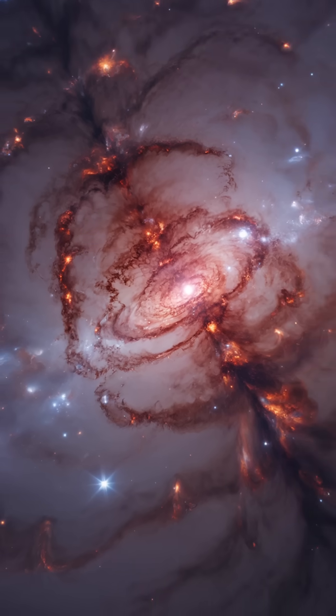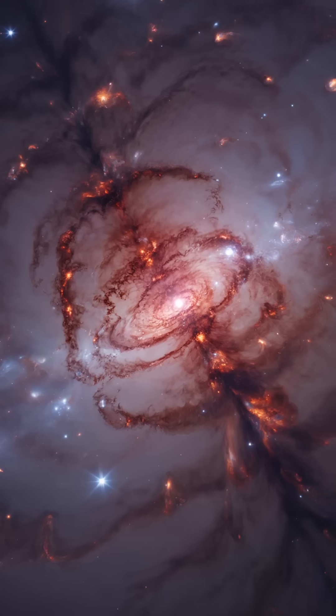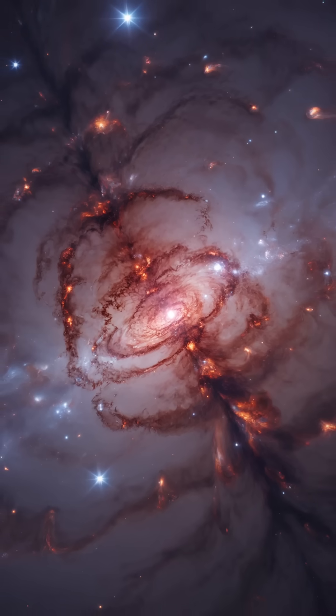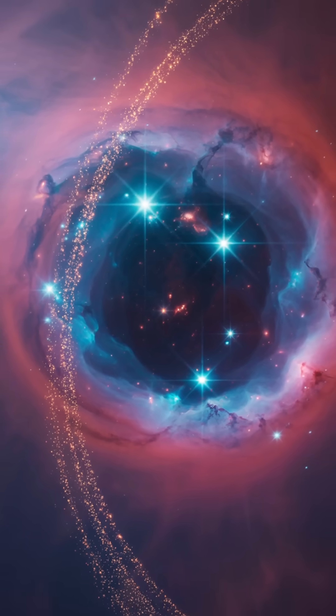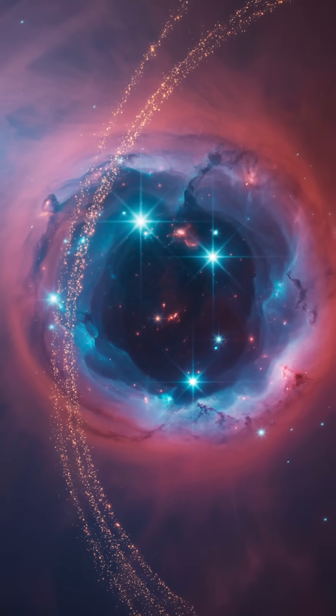In an instant, the star blasts its outer layers into space, outshining entire galaxies and forging heavy elements like gold, iron, and uranium. What remains after the blast depends again on mass.